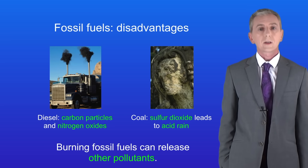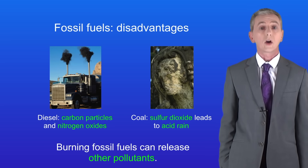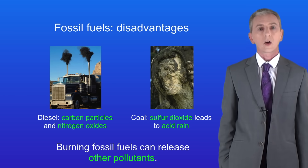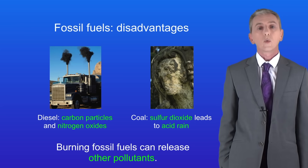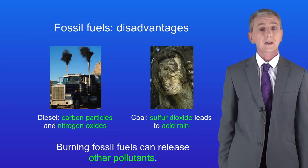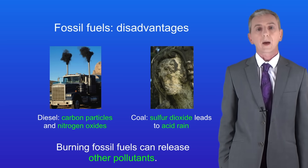The third disadvantage of using fossil fuels for energy is that they can release other pollutants. For example, burning diesel in cars and lorries releases carbon particles and nitrogen oxides, and we now know that both of these are extremely dangerous to human health. Burning coal can produce sulphur dioxide, which leads to acid rain, and this damages buildings and trees.